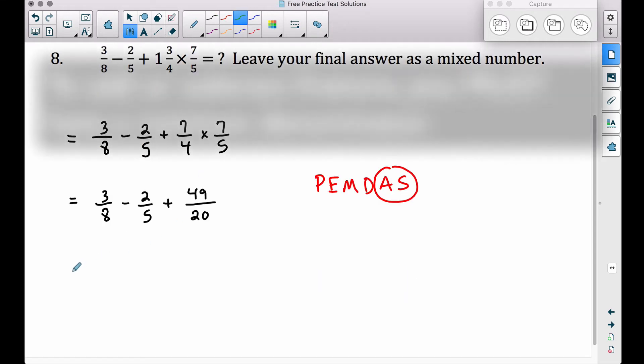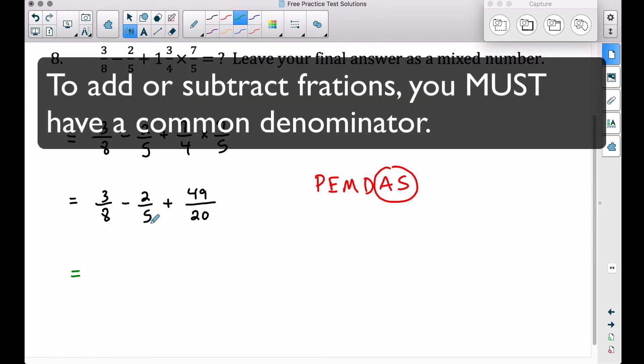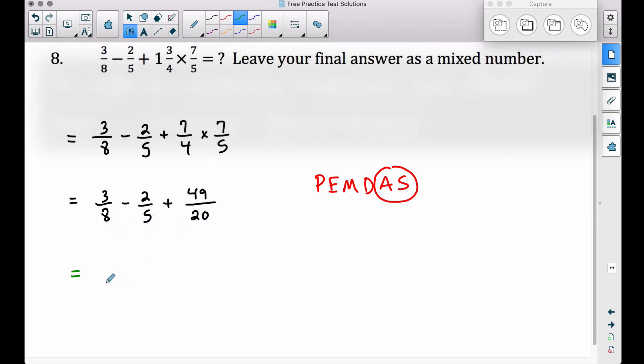Now what I'm going to do in this problem though, is I'm going to go ahead and get a common denominator for all of these pieces, and it turns out that's going to be forty. Forty is the first number that eight will go into, five will go into, and twenty will go into. So let's get a common denominator for all three of these fractions.